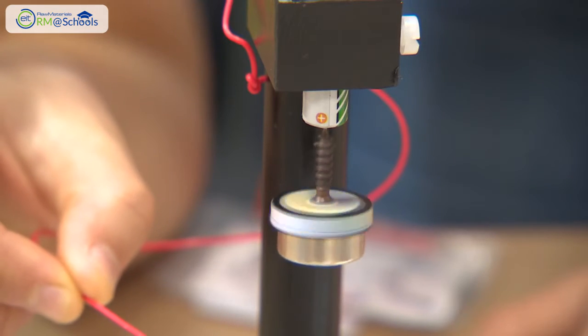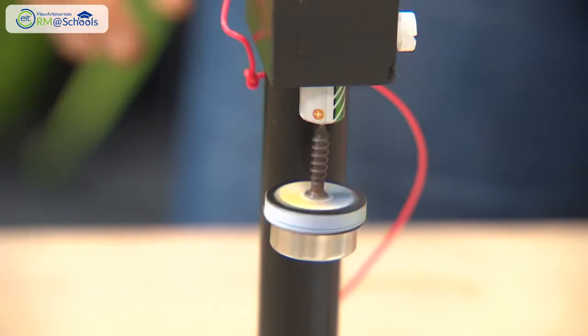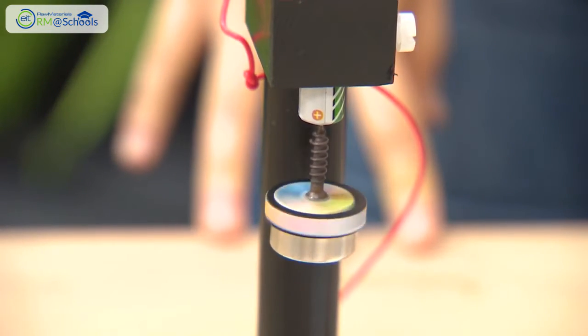In this case, where we close the circuit connecting the current with the electromagnetic field, we have the rotation of the engine.